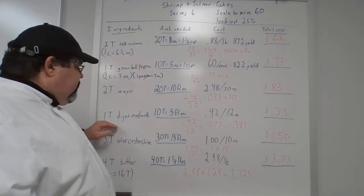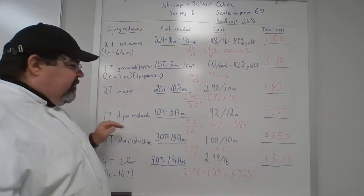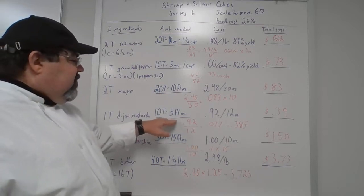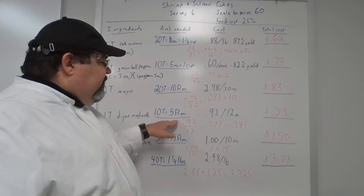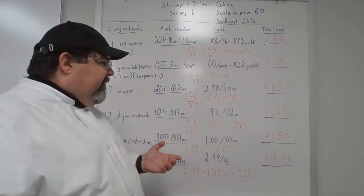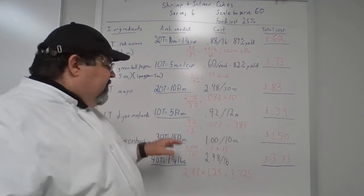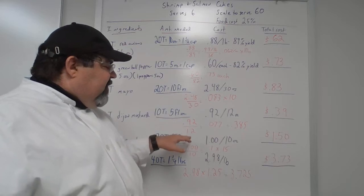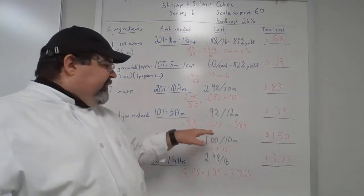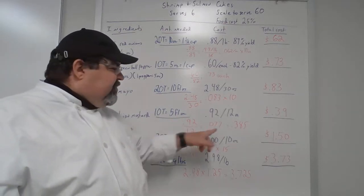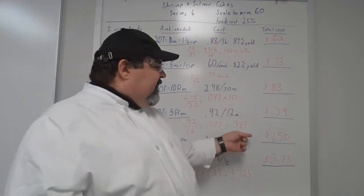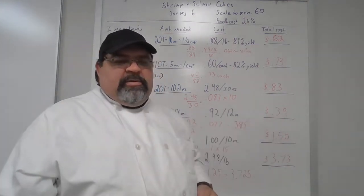For the Dijon mustard, you need one tablespoon, so scaled up for 60 servings you need 10 tablespoons or five fluid ounces. That mustard is 92 cents for a 12-ounce bottle. Take 92 cents divided by 12 to get $0.077 cost per ounce, then multiply by five fluid ounces to get $0.385 — rounding up to $0.39.